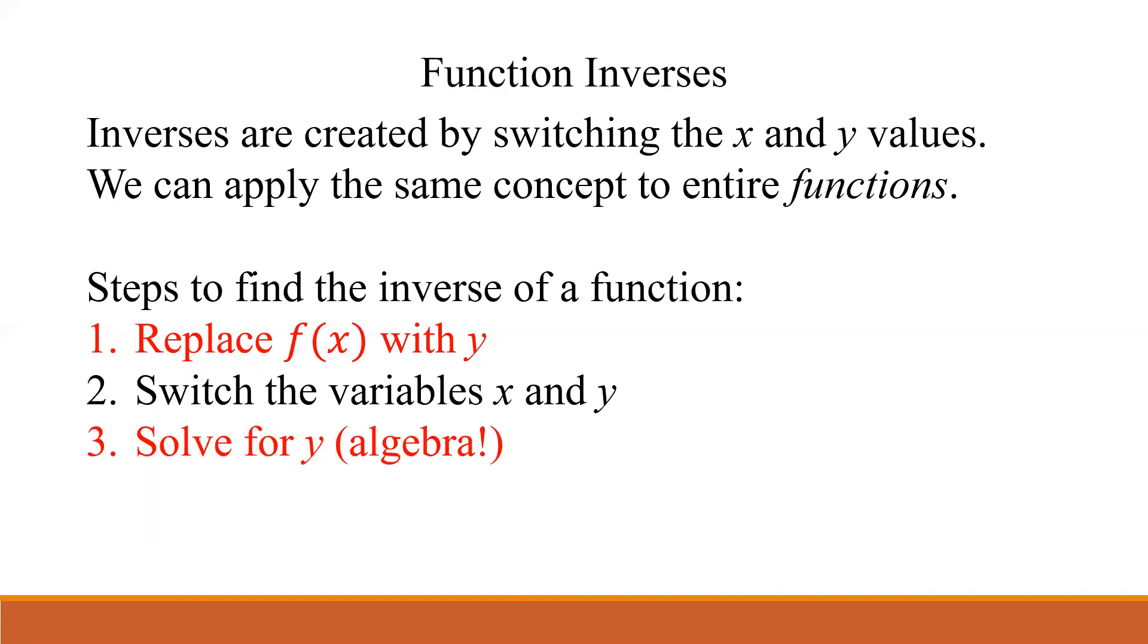Once we do that, we're going to literally switch the x and y variables, just like we did with the points, but now symbolically with all the points at once. We're going to solve that for y, and this is where some algebra comes in, so there may be some additional steps to get y by itself. Then finally, when we actually write the answer, once we get y by itself, we have our inverse, and we're going to use this special notation, f^(-1)(x). That's not a power of negative 1. That's the notation we use to denote that we found the inverse.